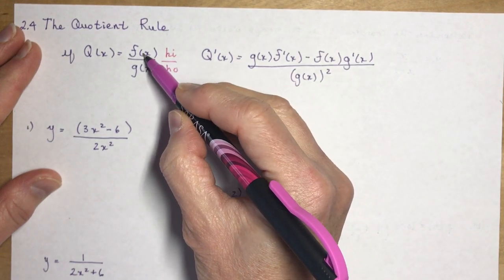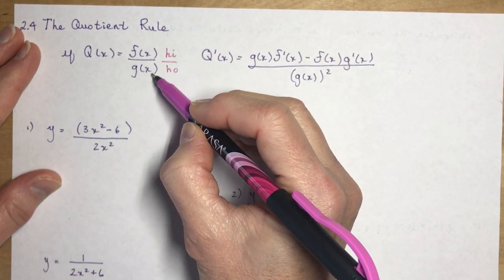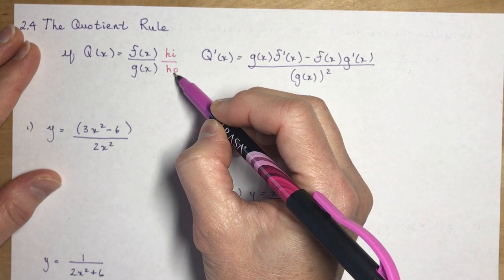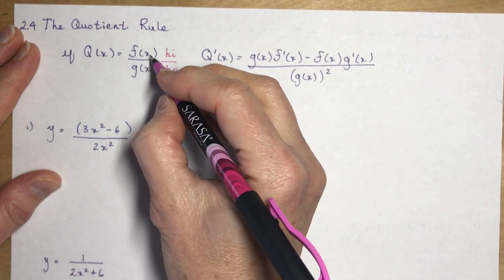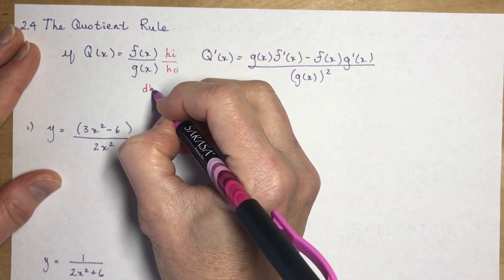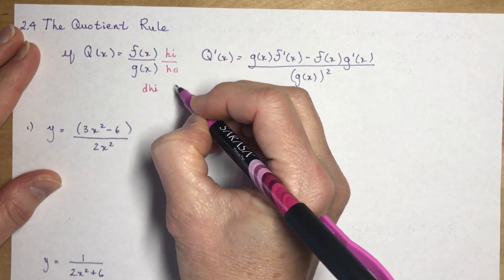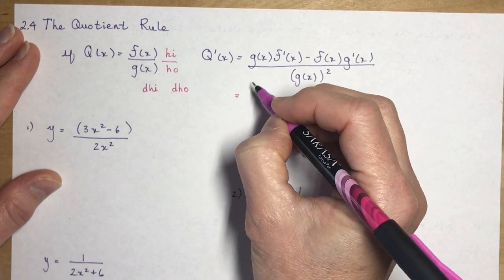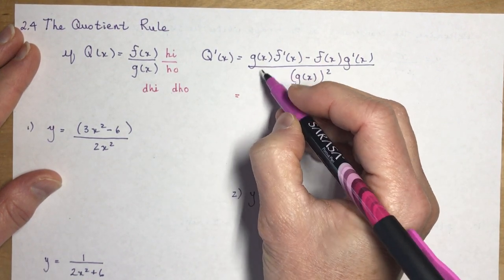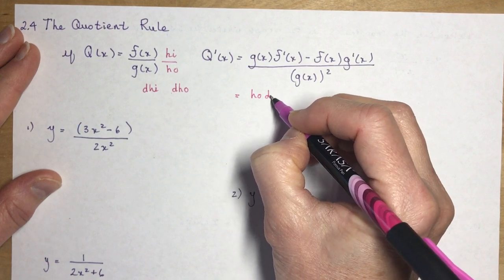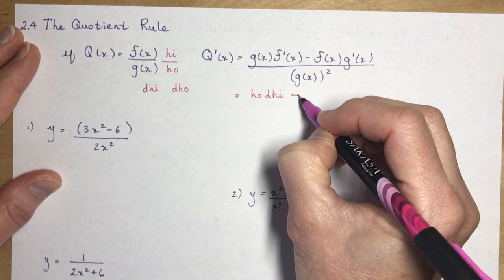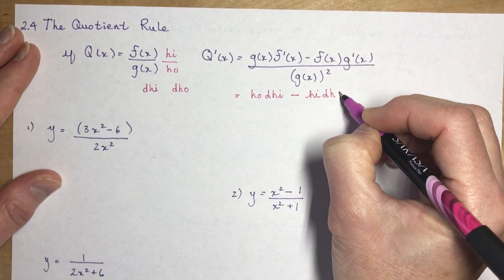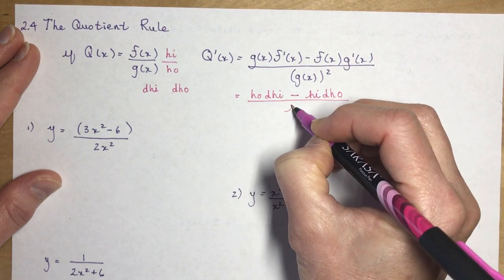If we talk about the top function as being high and the bottom function as being ho or low, then the derivative of the high one would be d-hi, and the derivative of the bottom would be d-ho. So we get ho d-hi minus high d-ho over ho squared.